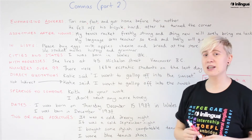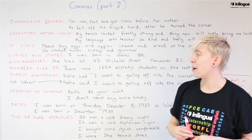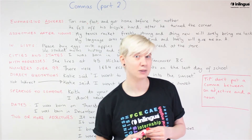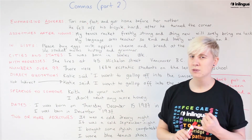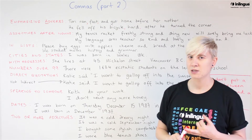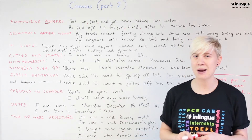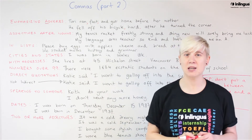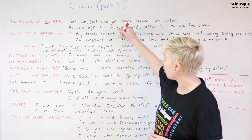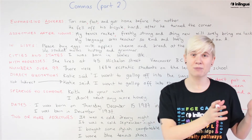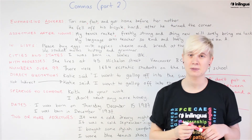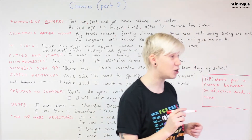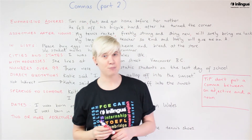Next up we have adjectives after nouns. Example: 'My tennis racket, freshly strung and shiny new, will surely bring me luck.' We're looking for our noun and our adjectives. The noun — the thing we are talking about — is 'my tennis racket.' This is the first piece of information in the sentence, so we need a comma right after it. If we have the noun up front before the description, we have to have a comma.